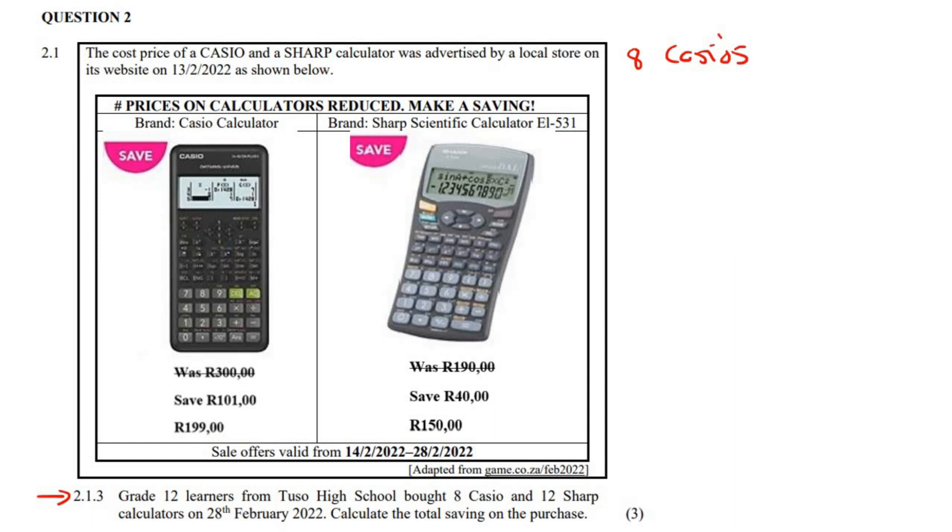Well, for each calculator that they bought, they saved 101 rand because they were buying it on a special. So the total amount that they saved there would be 8 multiplied by 101, which would be 808 rand.